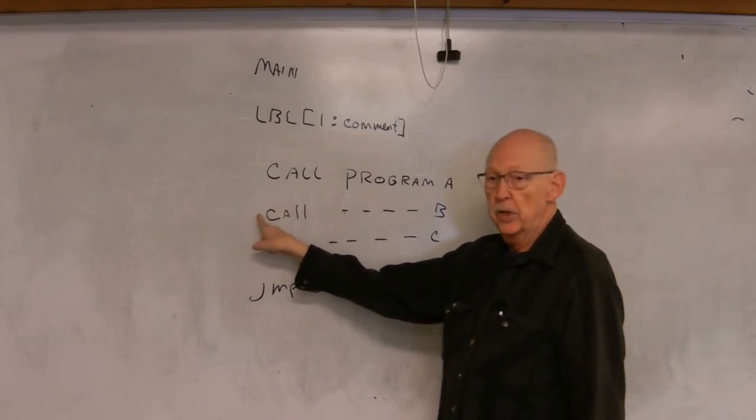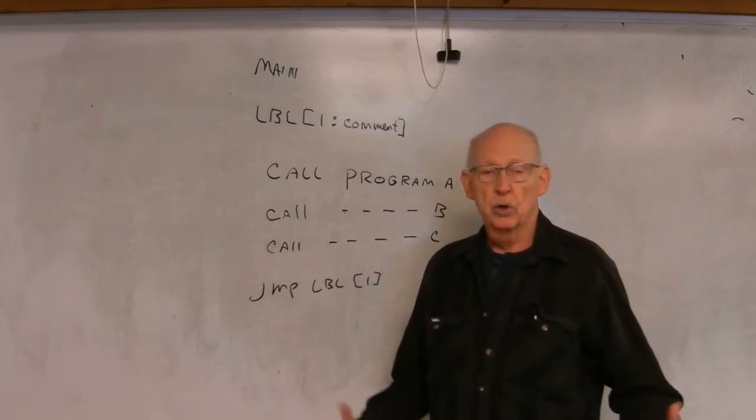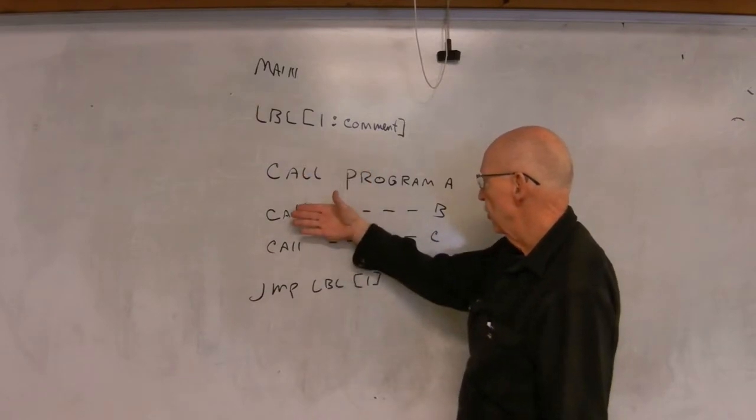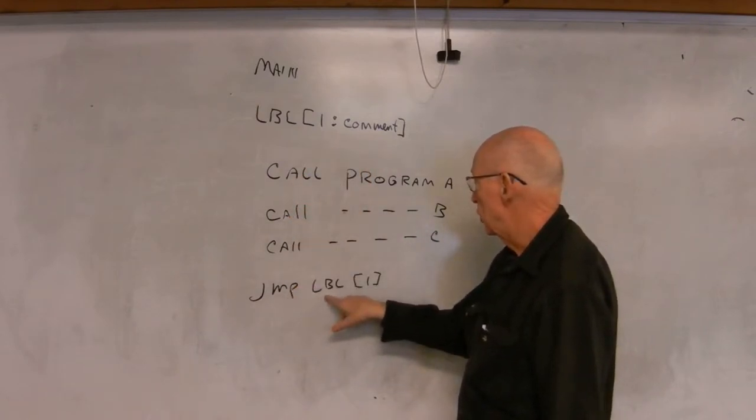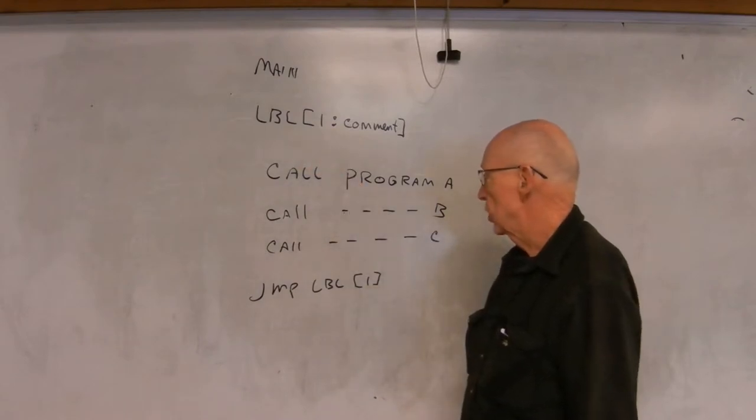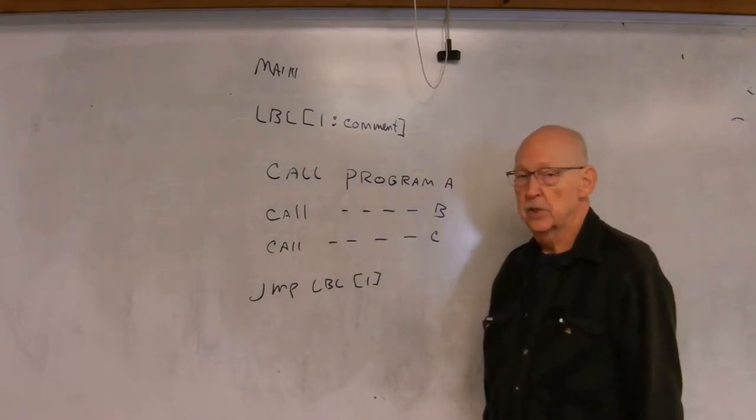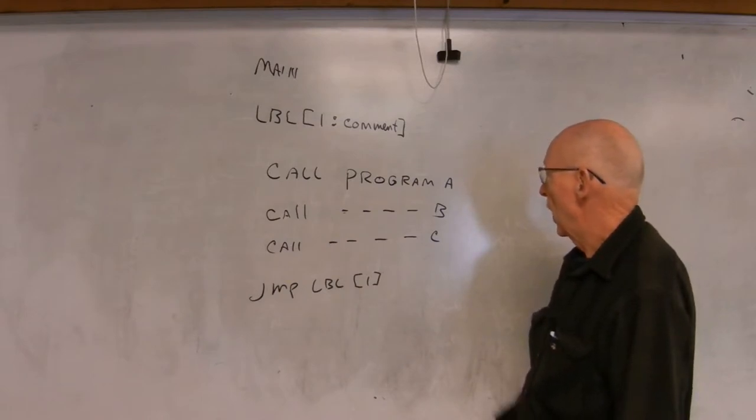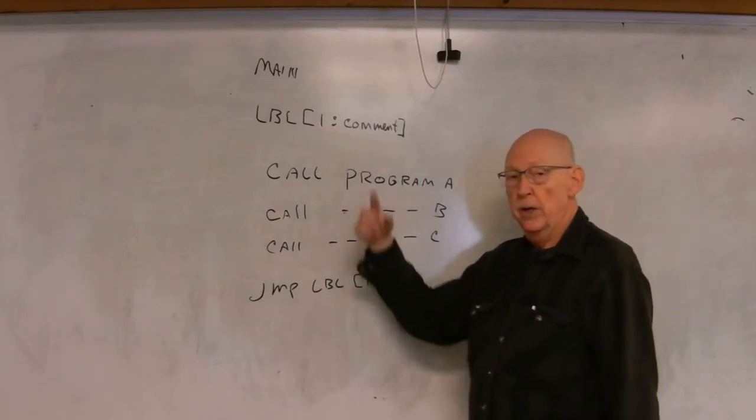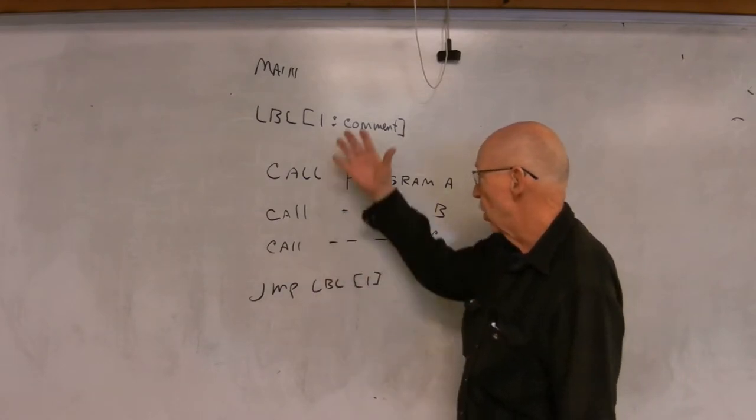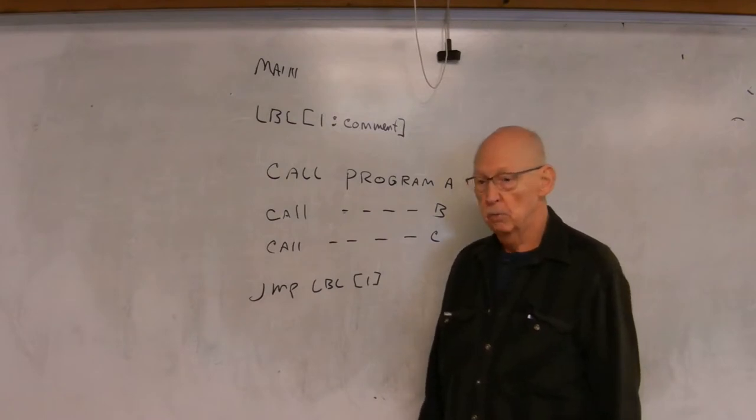So you don't need any return or return from subroutine or anything like that. So we'll call these three programs and then jump back to label one. Just like the first example I cited of an unconditional jump, it would just loop through this and keep going until you did the hold and then function abort all. So these are unconditional jumps.